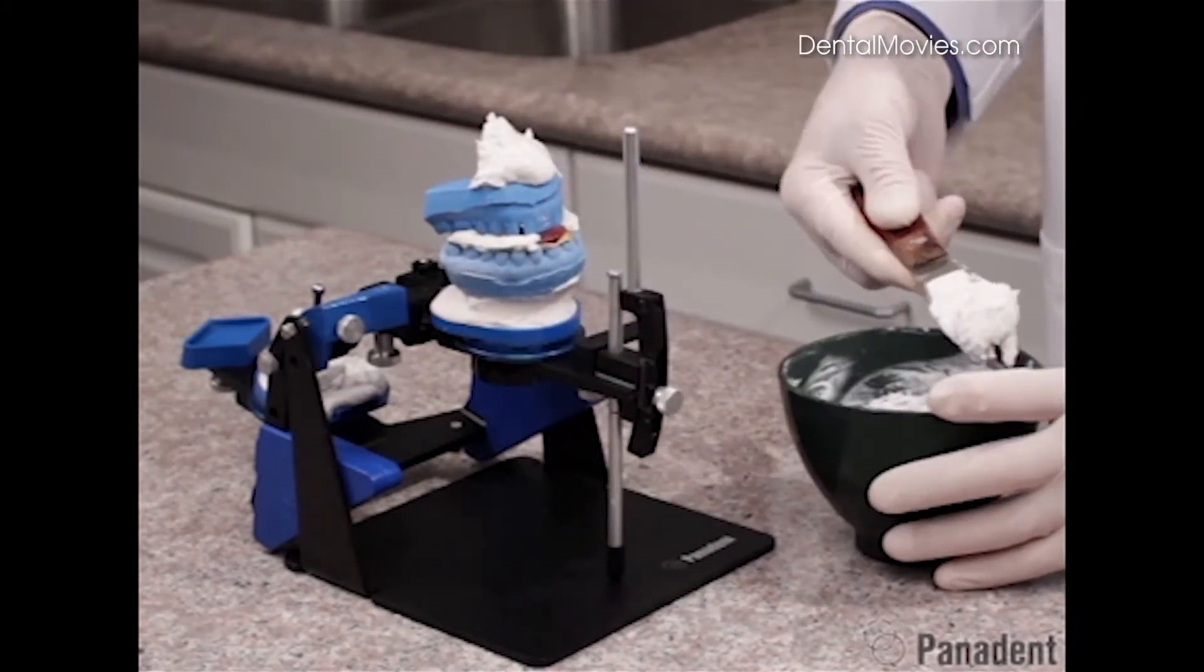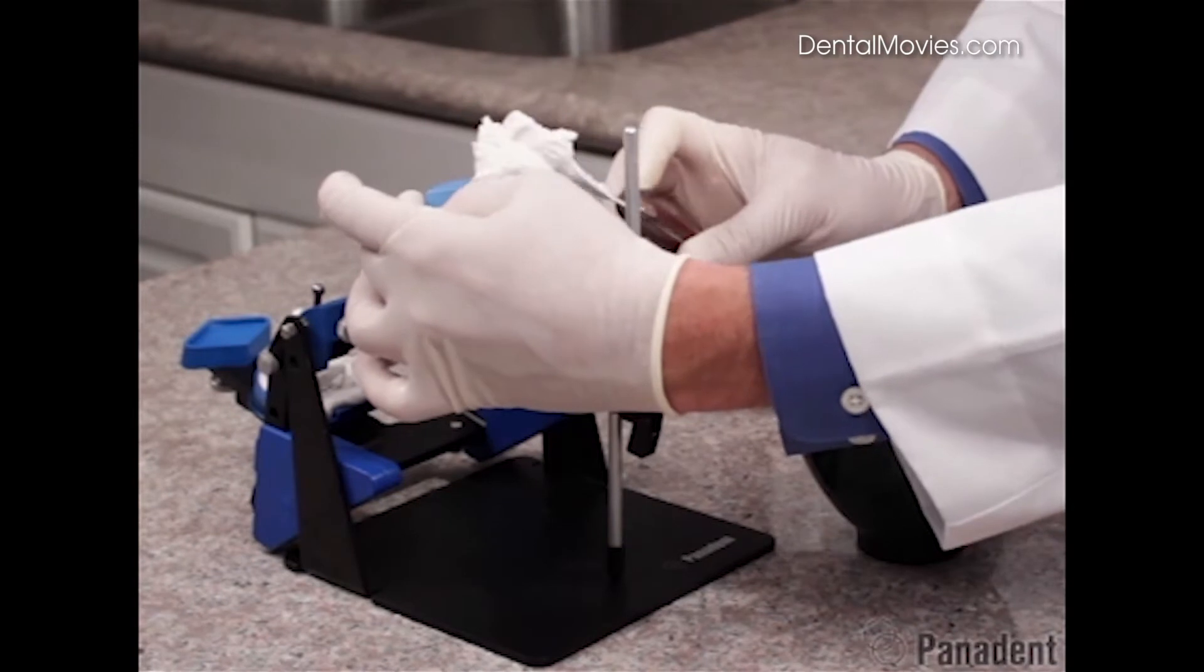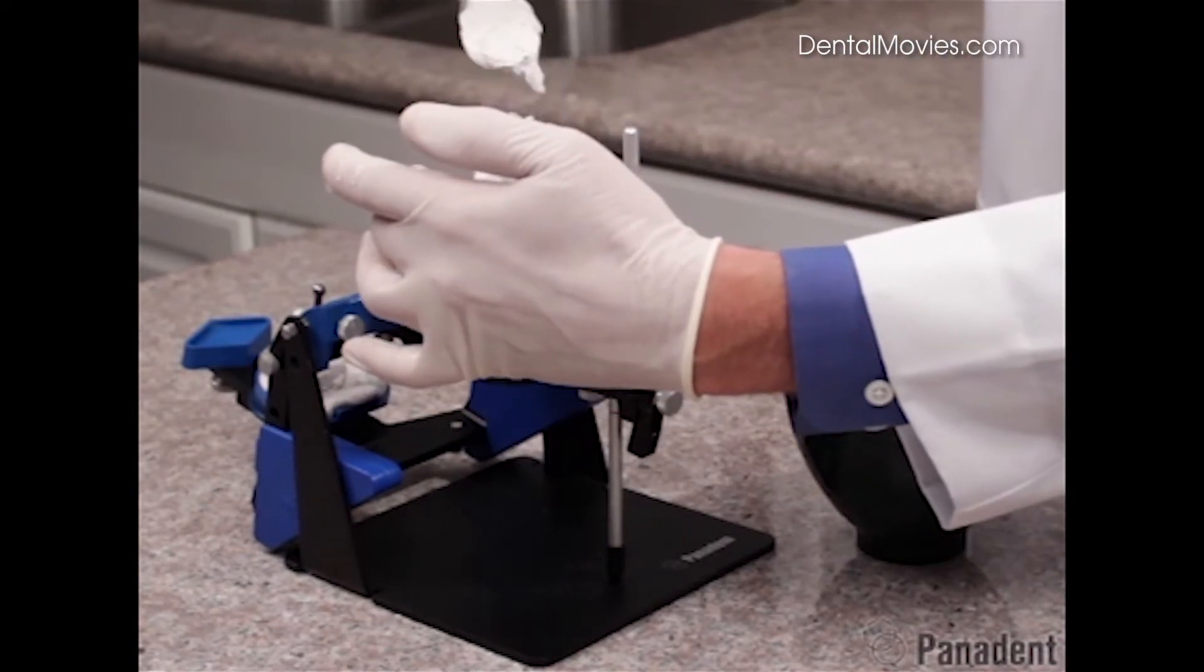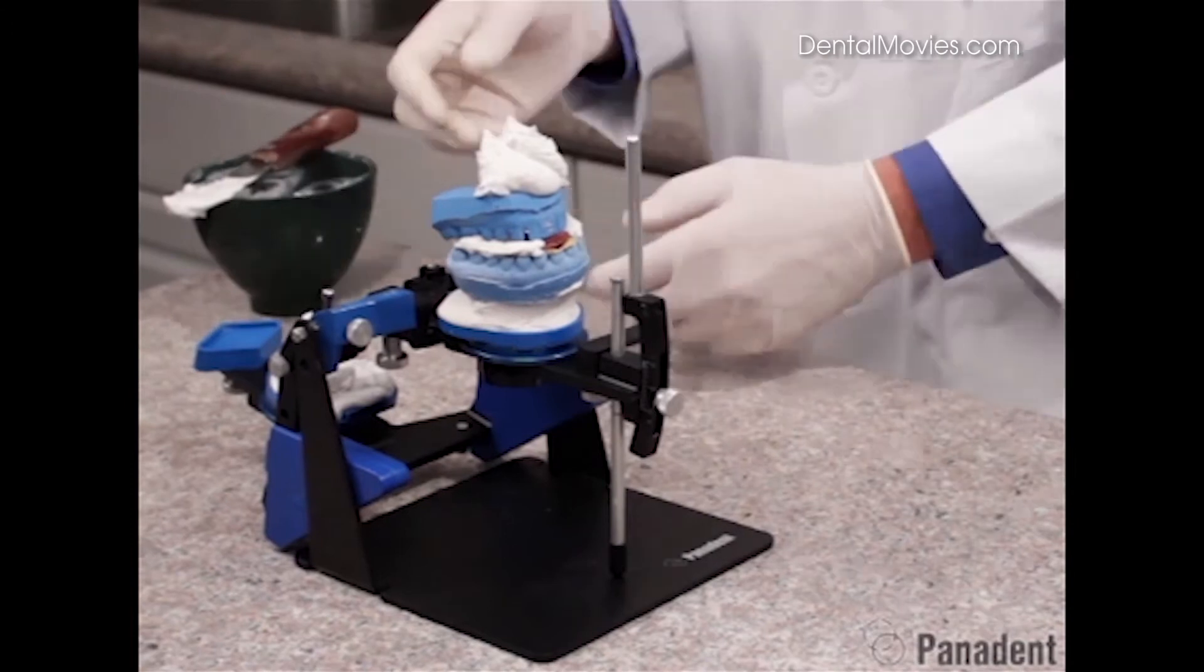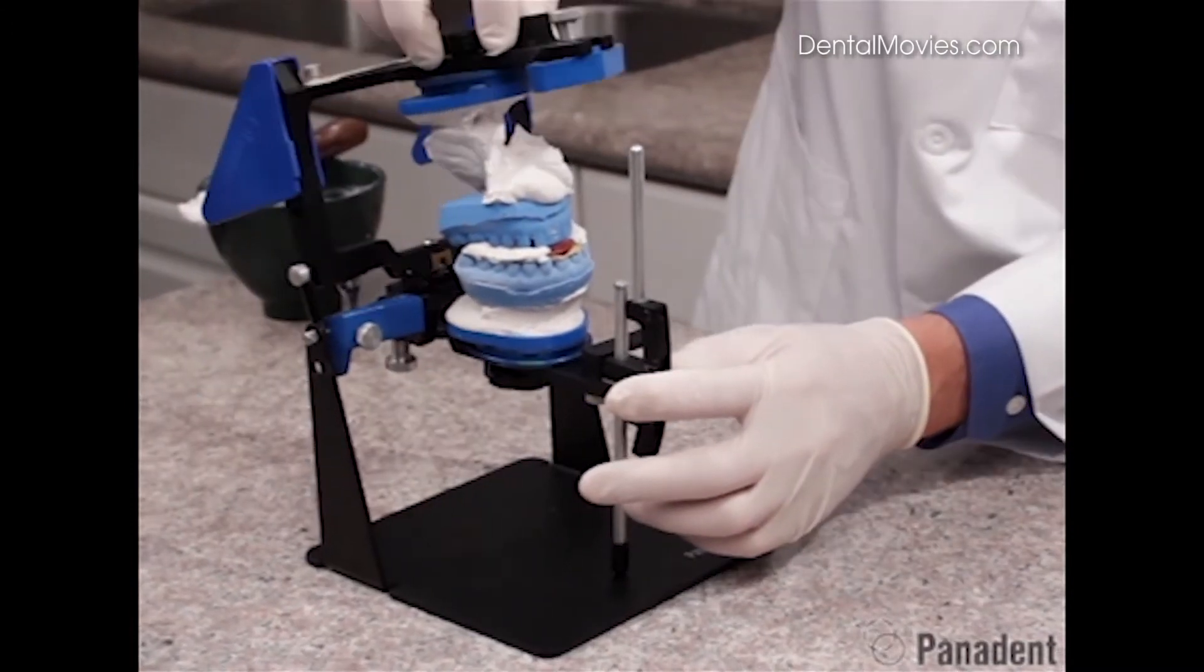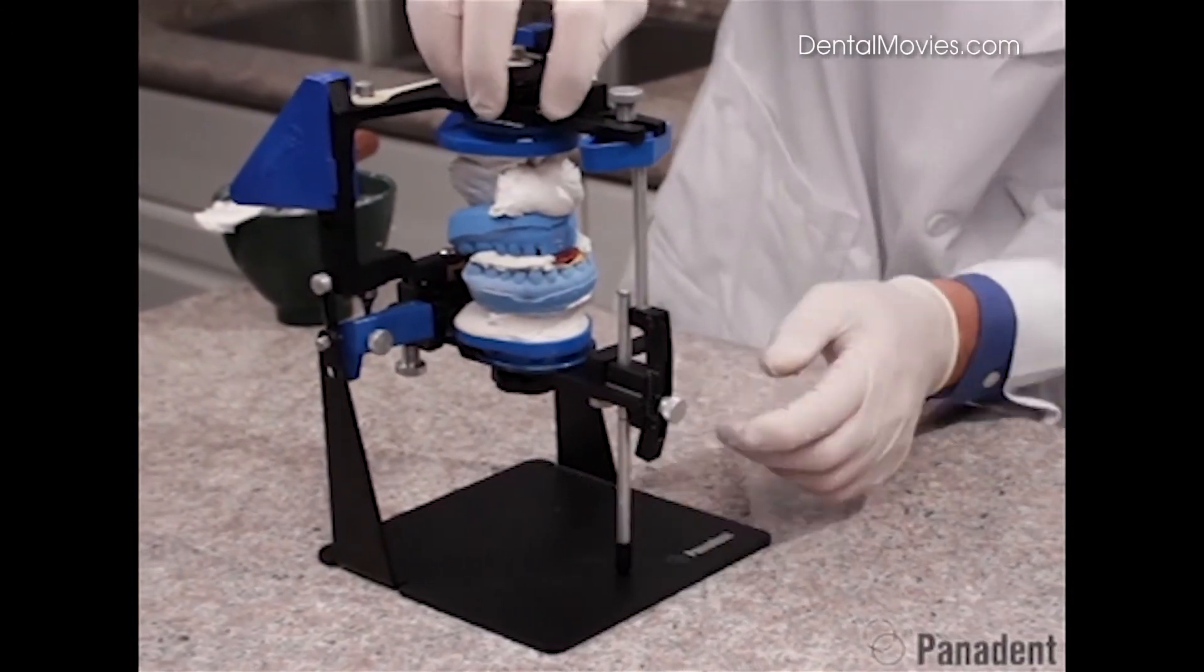So we'll add some plaster to that and then we'll add a little plaster to our model. Now all we need to do is just make a connection. So we'll swing this around, making a connection of the plaster to the mounting plate.